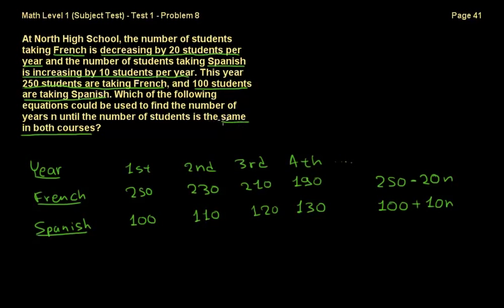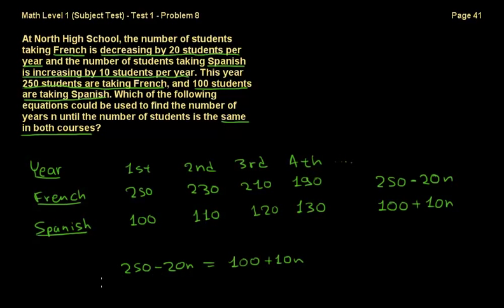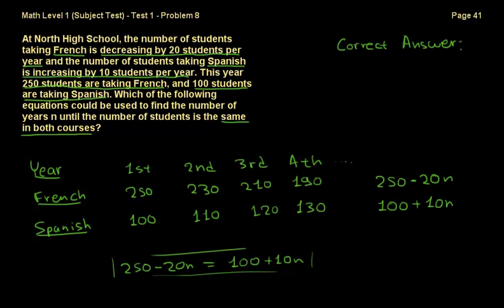What the question asks is to find the equation where the students are the same in both courses — where students taking French equals students taking Spanish at a given year. So 250 minus 20n has to equal 100 plus 10n. This is the answer to the problem. The correct answer is A.